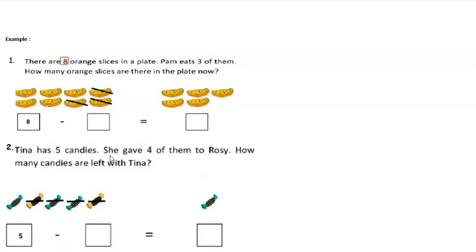We are told there are eight orange slices on a plate. Then Palm eats three of them. How many orange slices remain after Palm has eaten three? We had eight, and Palm ate one, two, and three. Counting what remained: one, two, three, four, five. So eight orange slices less three orange slices gives you five orange slices.